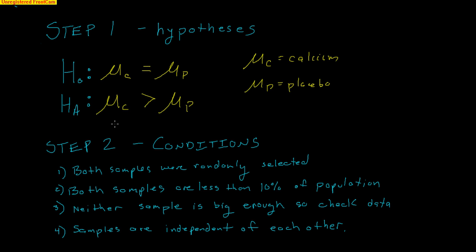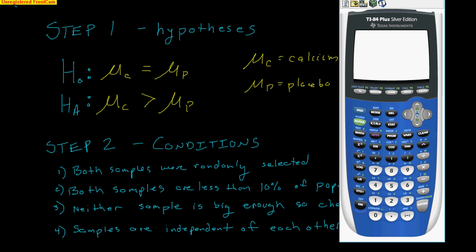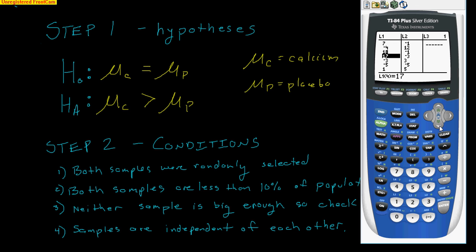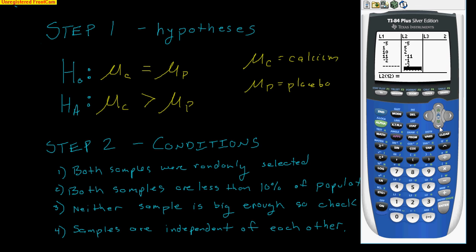Step two — conditions. Both samples were randomly selected, and both samples must be less than 10% of the population. Neither sample is big enough (both under 30), so we need to check the data for outliers and skewness. The data for list one is the calcium group — values include drops of 7, gains of 4, drops of 18, 17, etc. Positive values mean blood pressure dropped and negative values mean it went up. List two is the placebo group of 11 people, also with a mix of positive and negative values.